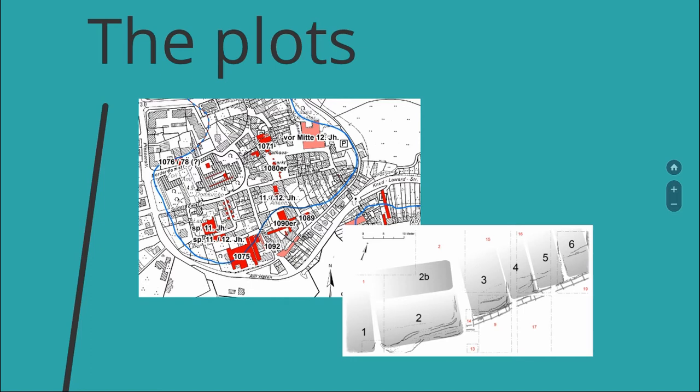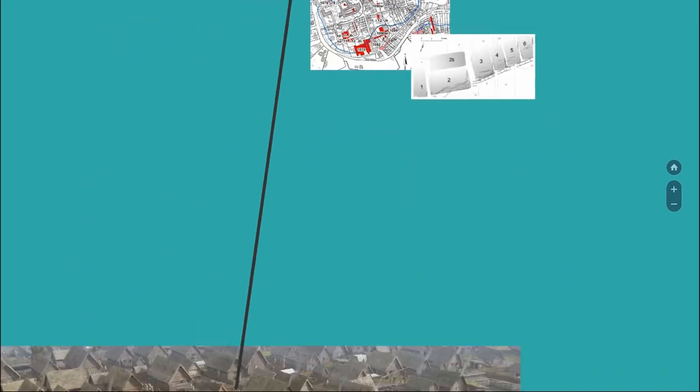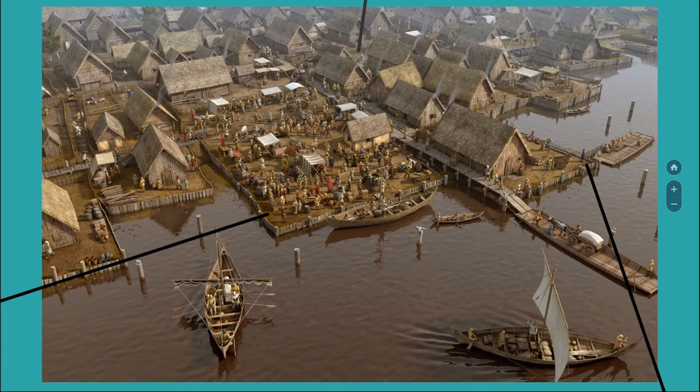There was a layout of rectangular plots set perpendicular right up to the shore. They were connected with a short parallel street and also streets running from the shore to the city center. These plots can mainly be seen in the upper part of the picture.